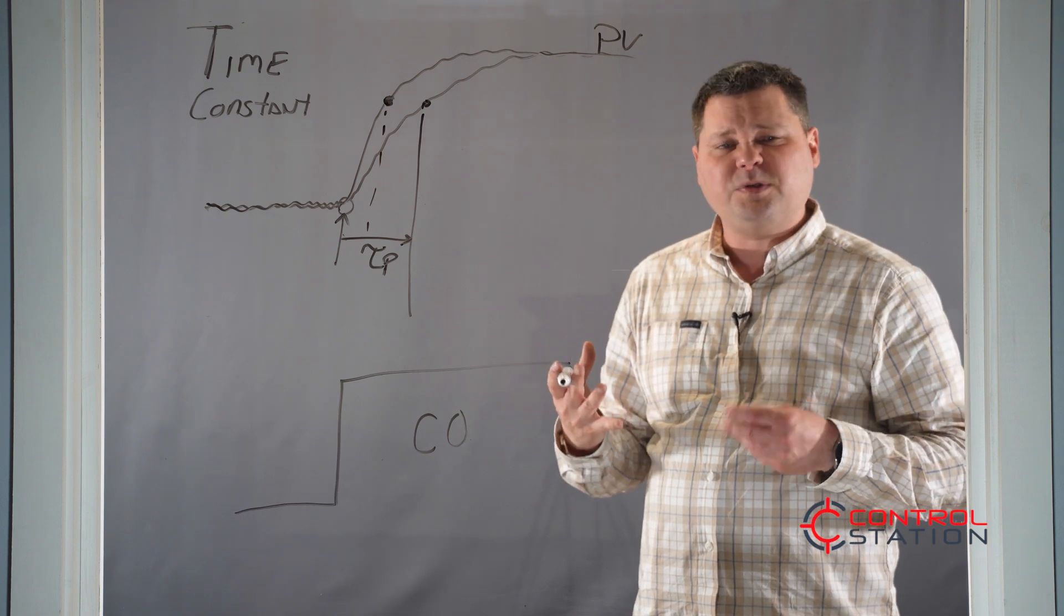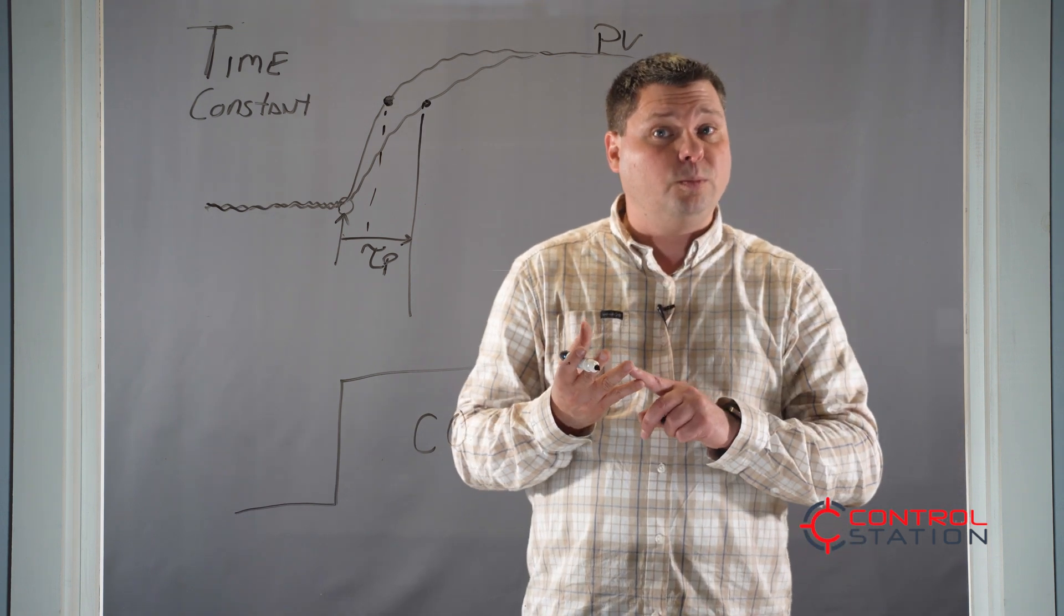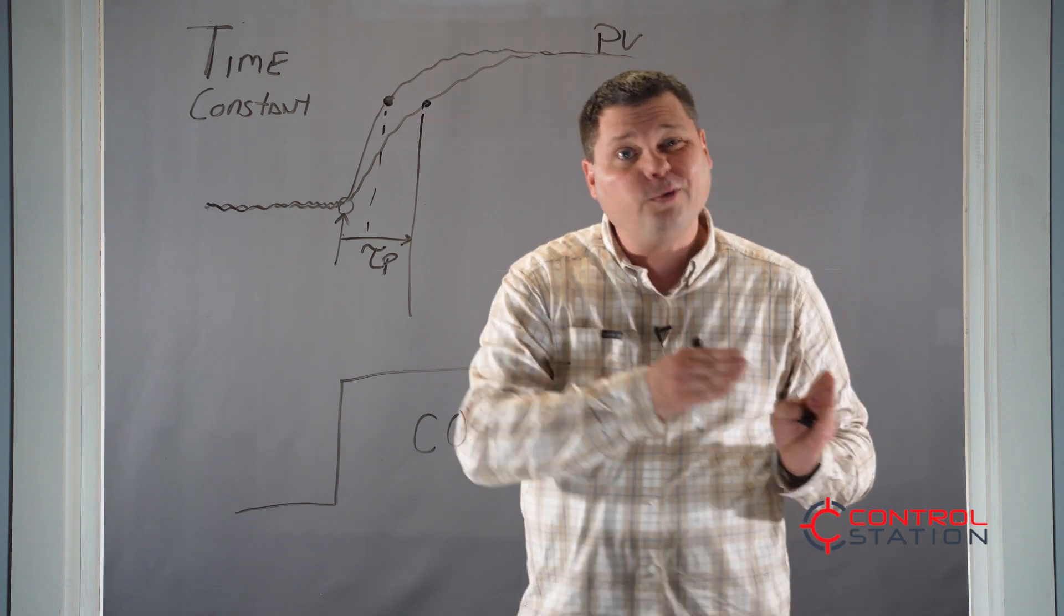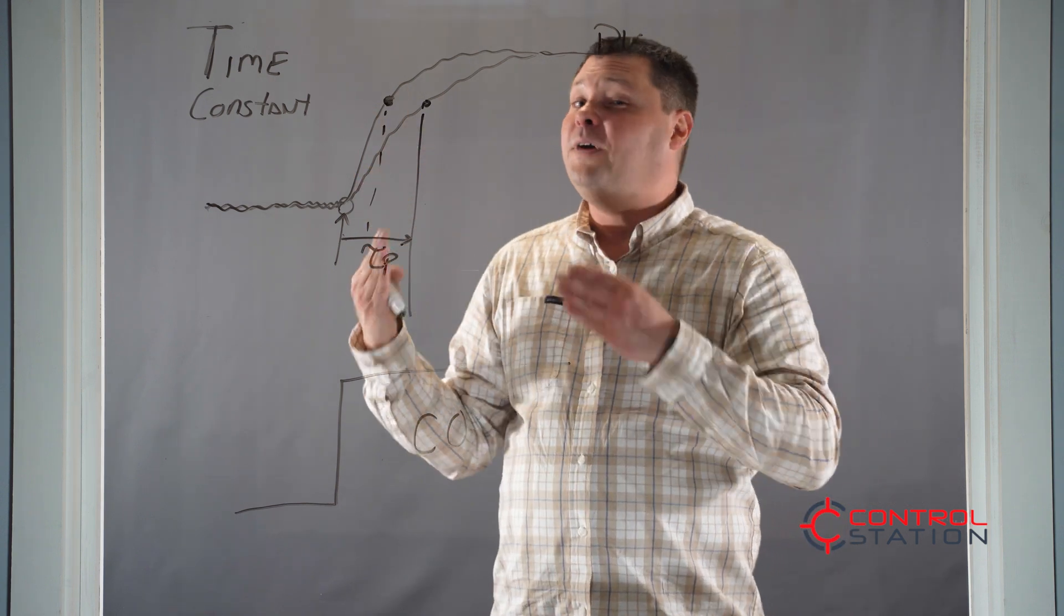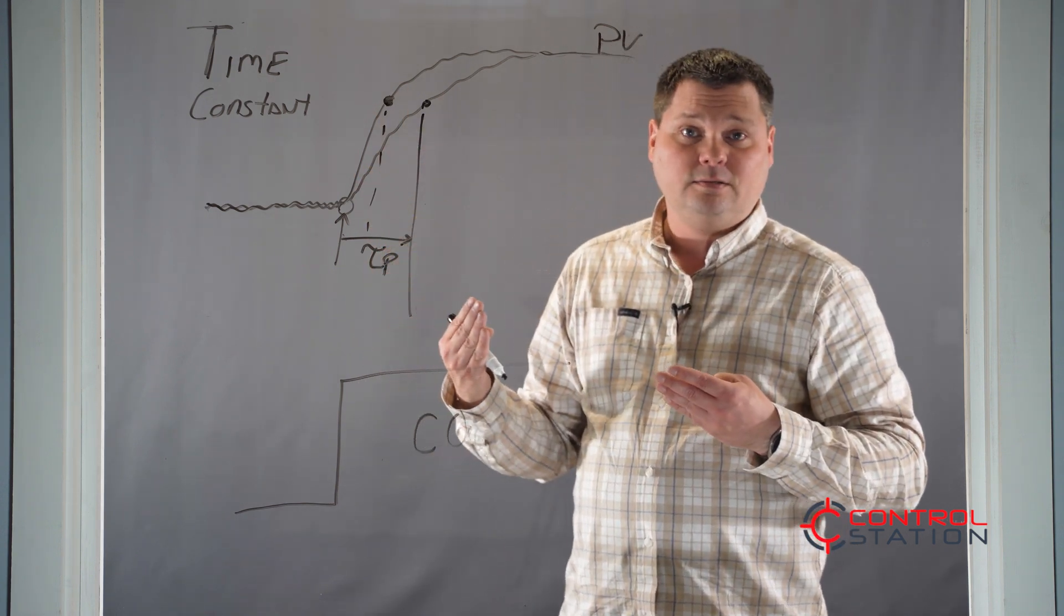What are some examples of fast loops? Things like flow loops or pressure loops, where when you move the output, the process variable gets to its final position very quickly within seconds.